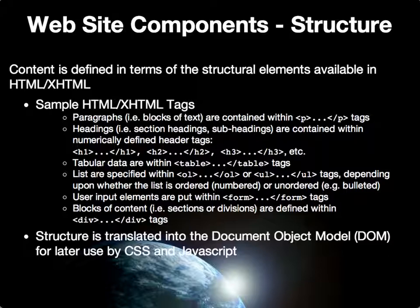Ultimately, all of this structural information defined through HTML or XHTML tags is translated into the Document Object Model, or DOM, by the web browser reading the document. It is this DOM that is later used by Cascading Style Sheets and JavaScript to identify which parts of the document should be modified in terms of presentation, or which DOM objects should have behaviors attached or be modified through JavaScript.